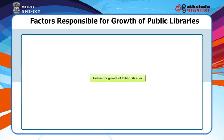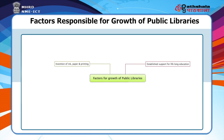Factors responsible for growth of public libraries. There are various factors which are responsible for growth of public libraries. The first one which has impacted the development and growth of public libraries at large is the invention of ink, paper and printing. They were established to support lifelong self-education. The increasing number of literates and new literate citizens in society has also contributed to the growth and development of public libraries.